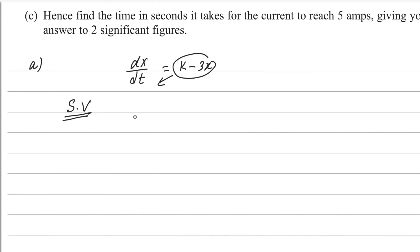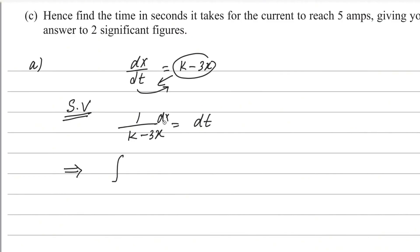Rearranging: dt will go to the right side, so we get 1 over (k minus 3x) dx on the left. Now we can integrate both sides. On the left it is the integral of 1/(k minus 3x) dx, and on the right it is the integral of 1 dt.